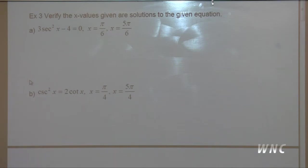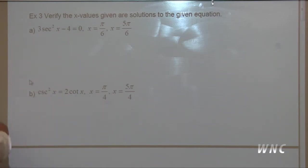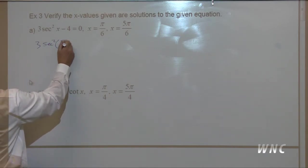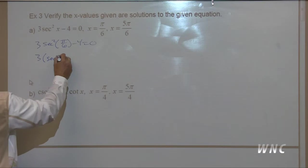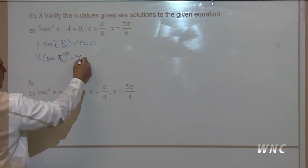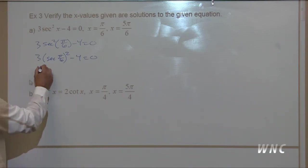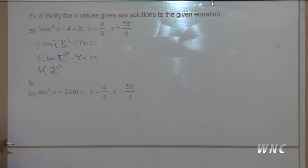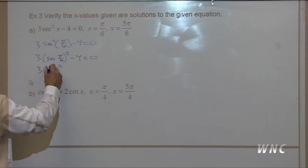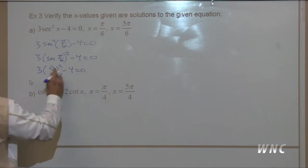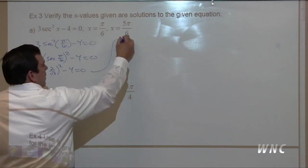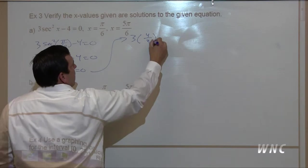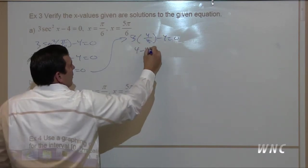Verify the x values given as solutions to the equation: three secant squared x minus four equals zero. For x equals pi over six: three times secant squared of pi over six minus four. Secant of pi over six is two over square root of three, so secant squared is four-thirds. This gives three times four-thirds minus four, which is four minus four equals zero. It works.